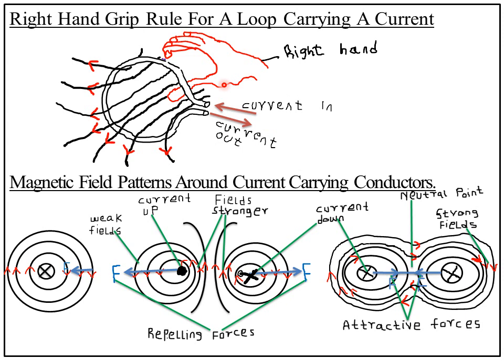Next we look at the right-hand grip rule for a loop carrying a current. A loop is a circular arrangement of current. The right-hand grip rule for a loop carrying a current states that if the fingers of the right hand encircle the current loop such that they point in the direction of the current, the thumb points in the direction of the magnetic field formed through the inside of the loop.